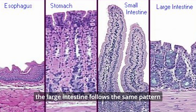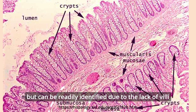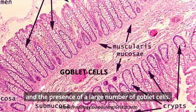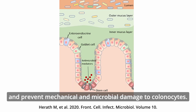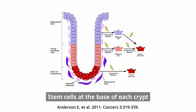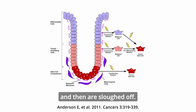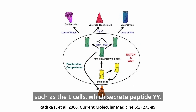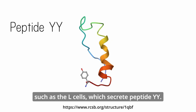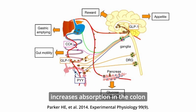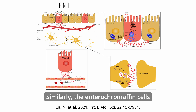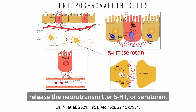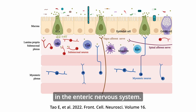Histologically, the large intestine follows the same pattern as the rest of the digestive tract, but can be readily identified by the lack of villi and the presence of a large number of goblet cells. Goblet cells secrete mucus to ease the movement of feces through the colon and prevent mechanical and microbial damage to colonocytes. Stem cells at the base of each crypt divide to produce new colonocytes, which gradually migrate toward the surface and are then sloughed off. Some cells differentiate into neuroendocrine cells, such as L cells, which secrete peptide YY — a substance that slows gastric motility and increases absorption in the colon as part of the ileal brake negative feedback loop. Similarly, enterochromaffin cells release the neurotransmitter 5-HT, or serotonin, which modulates secretion and motility in the enteric nervous system.